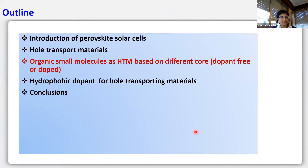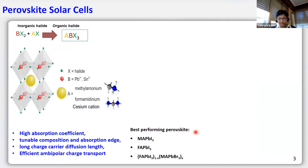This is the outline of today's talk. I will skip the introduction of perovskite solar cells and move to the topic of hole transporting materials. Among hole transport materials, we will be talking about organic small molecules as hole transporting materials, which could be based on different building blocks and could be dopant-free. If time permits, I will also discuss the development of hydrophobic dopants which can be used for hole transport materials and other organic semiconductor materials.